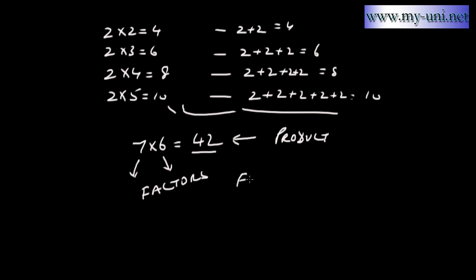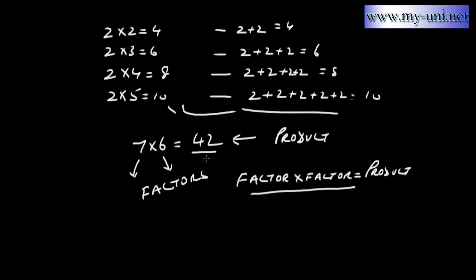So factor times factor is equal to product. In this case, 42 is the product, and 7 and 6 are factors of 42. I hope that defines multiplication, and now you have an idea of what factors and a product are.